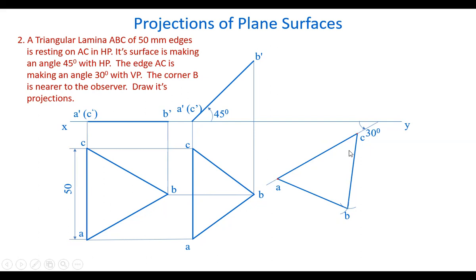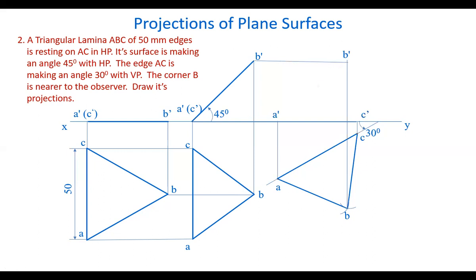Now draw the front view. Draw projectors from all points and draw horizontal lines from the corresponding previous front view points. Get the intersection points — A, B, C — and the corresponding front view points A dash, B dash, C dash. Join them by straight lines. This gives the final projection in the front view. This is the top view and this is the final front view.